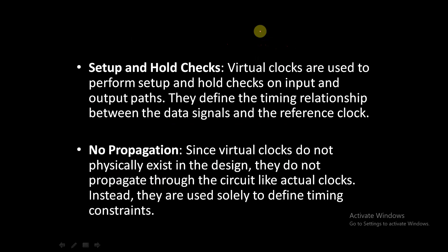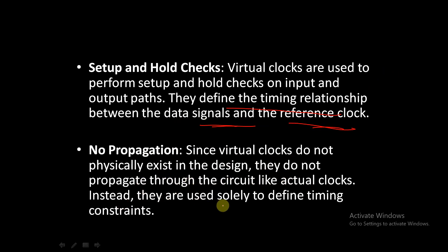Virtual clocks are used to perform setup and hold time checks on input and output ports. They define the timing relationship between the data signals and the reference clock — here, the virtual clock. Since virtual clocks do not physically exist in the design, they do not propagate through the circuit like actual clocks. They are used solely to define timing constraints, so there is no propagation of this clock throughout the circuit.